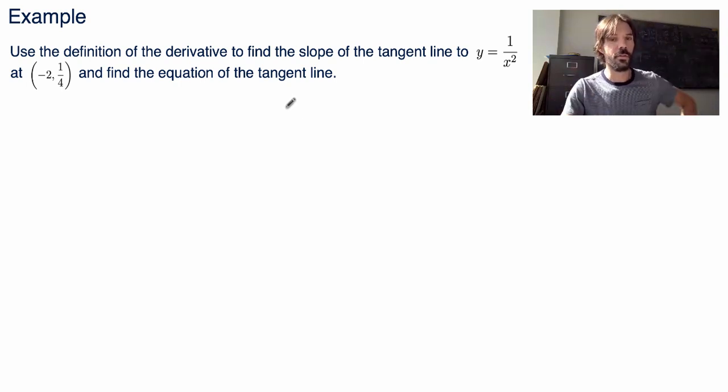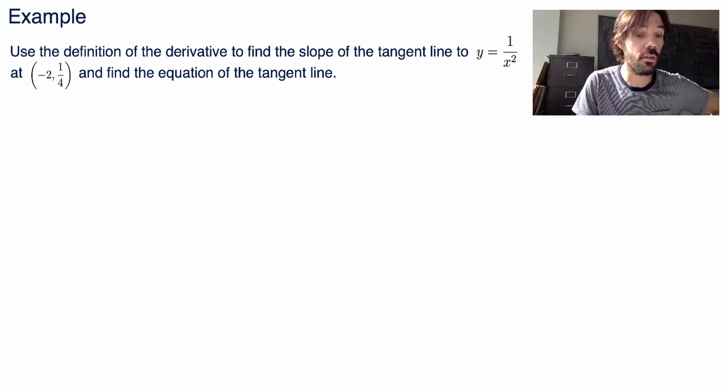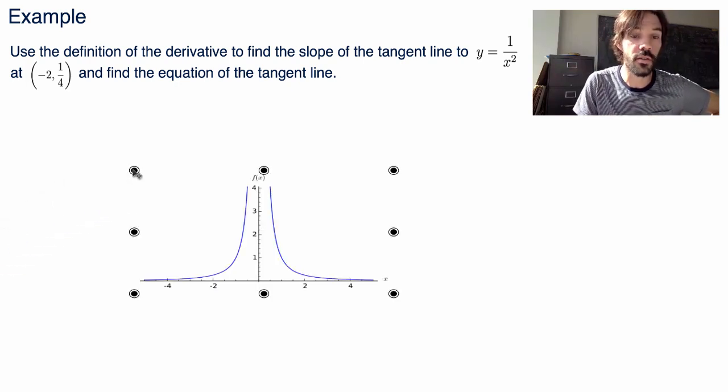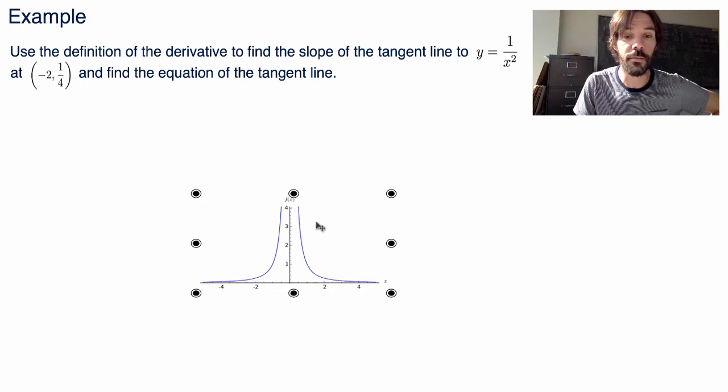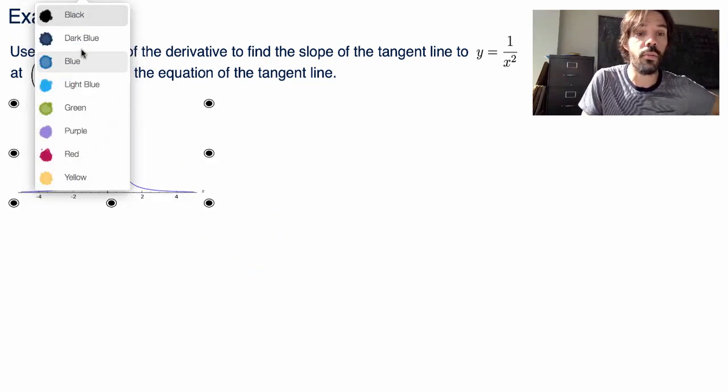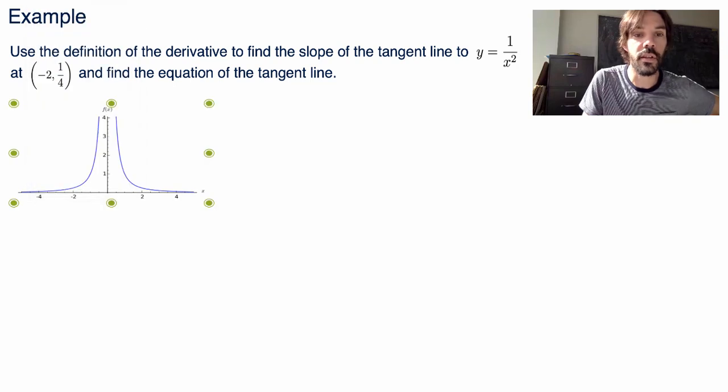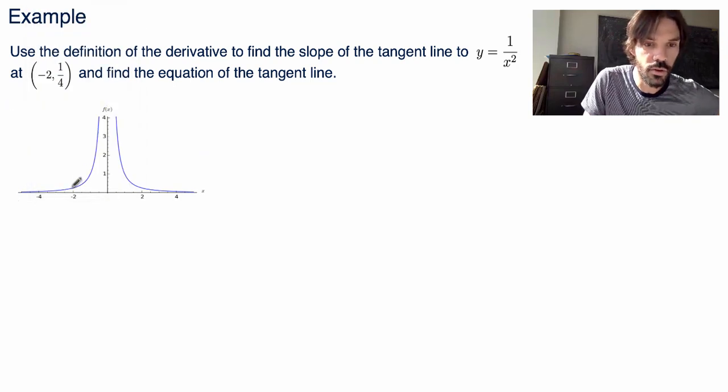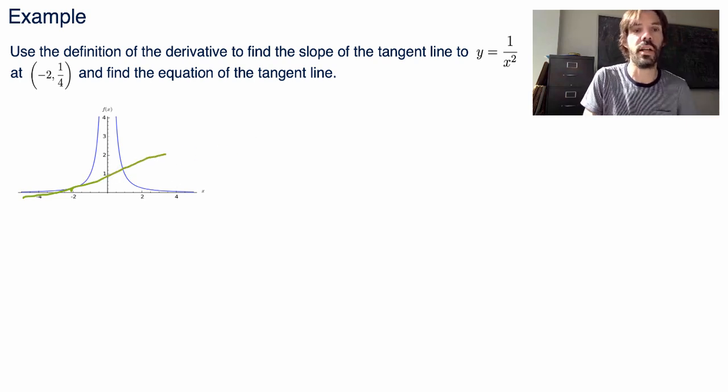Well, my advice whenever you're faced with a problem like that is to first sketch a graph of the function to have an idea of what you're going to do. So in this case the function is 1 over x squared. So if you sketch a graph of that function you'll end up with something like this. And the point we're interested in here is the point minus 2, 1/4, which is somewhere like here. And we're interested in finding the equation of the tangent line at this point. So the tangent line would look like something like that.